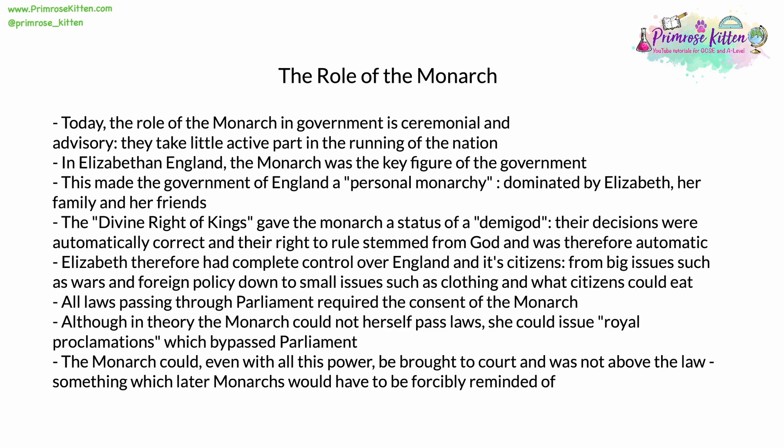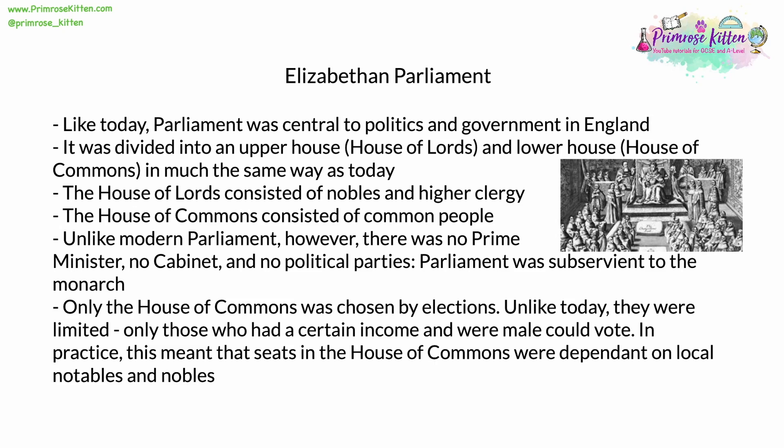The monarch could, even with all this power and even with the divine right of kings, be brought to court. The monarch was not above the law, something which later monarchs would have to be forcibly reminded of. The issue did not rear its head during Elizabeth's reign. Like today, parliament was in the Elizabethan age central to politics and government in England. Also like today, it was bicameral — meaning it was divided into two houses: an upper house, which was unelected, known as the House of Lords, and a lower house, which was elected, known as the House of Commons, terms which we continue to use to this day.